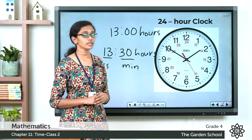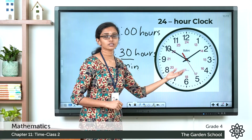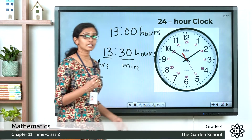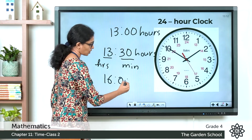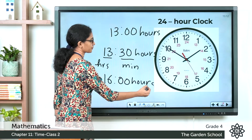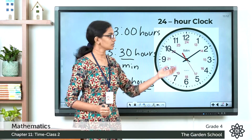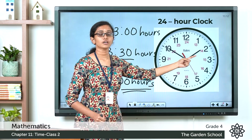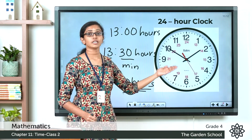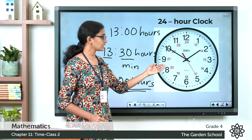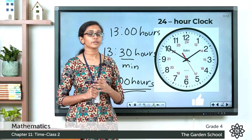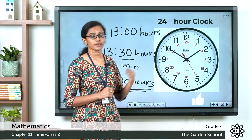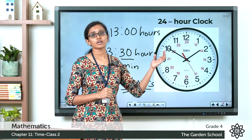If the time is 4:30 in the evening, we say it is 1630 hours. So 4 o'clock in the evening is represented as 1600 hours on a 24-hour clock system. Just keep in mind that on a 24-hour clock system, the hours after 12 noon are counted as 13, 14, 15, 16, 17, 18, 19, 20 and so on till 24. The beginning of a day is written as 0000 hours, whereas the end of a day is written as 2400 hours.